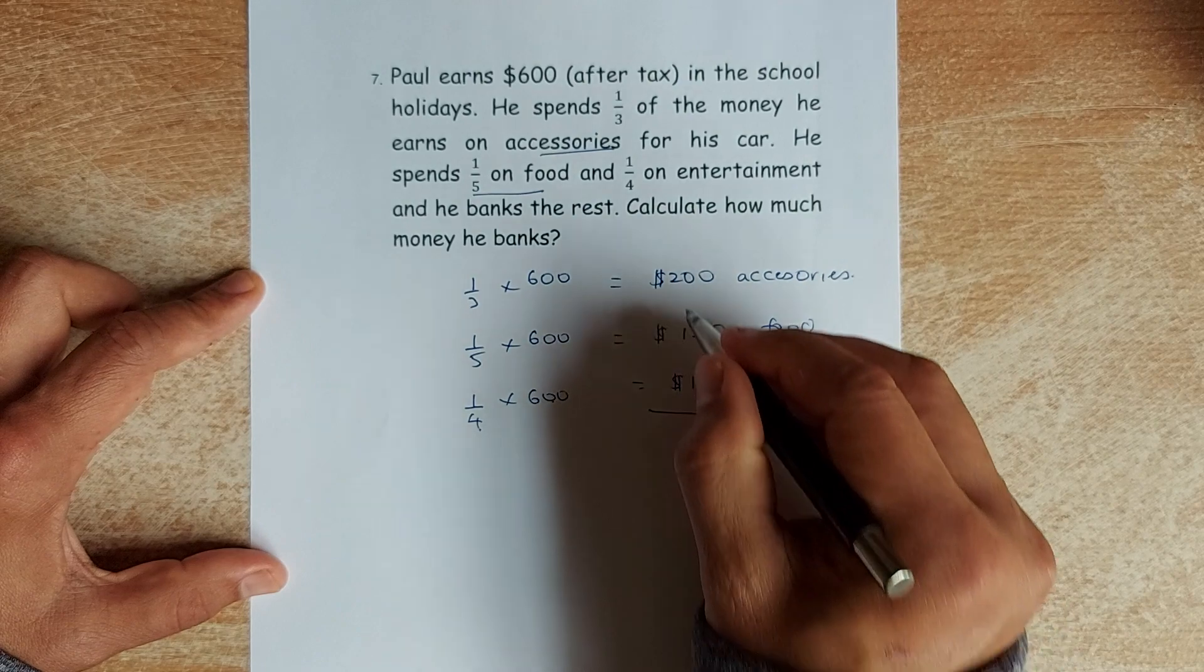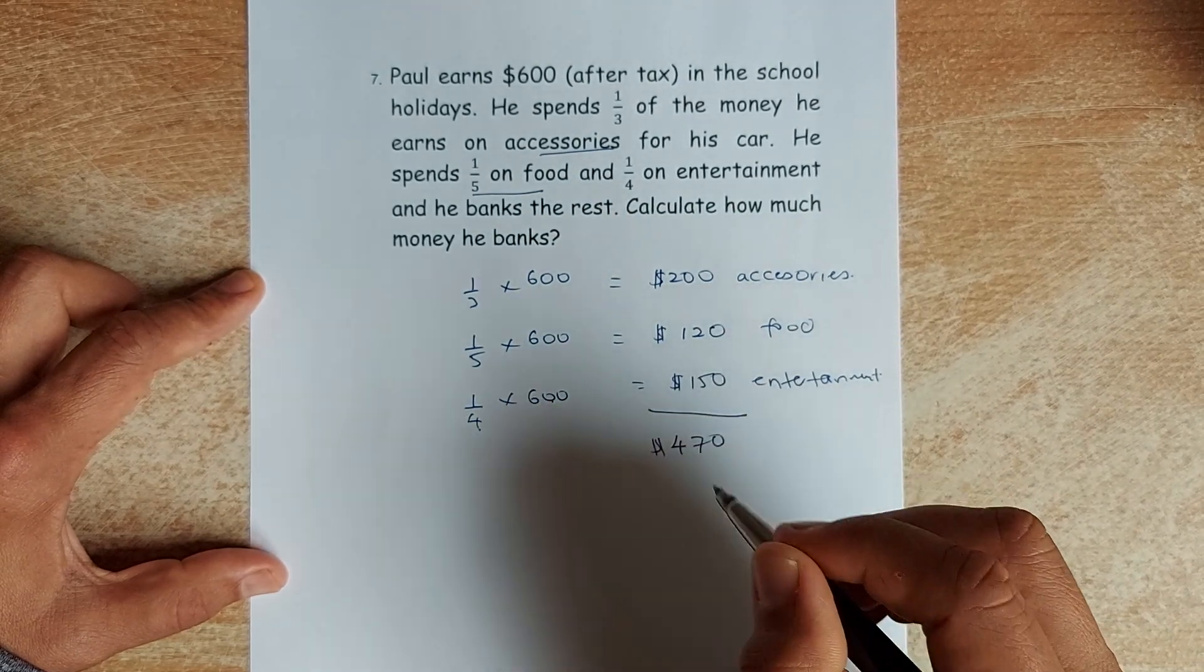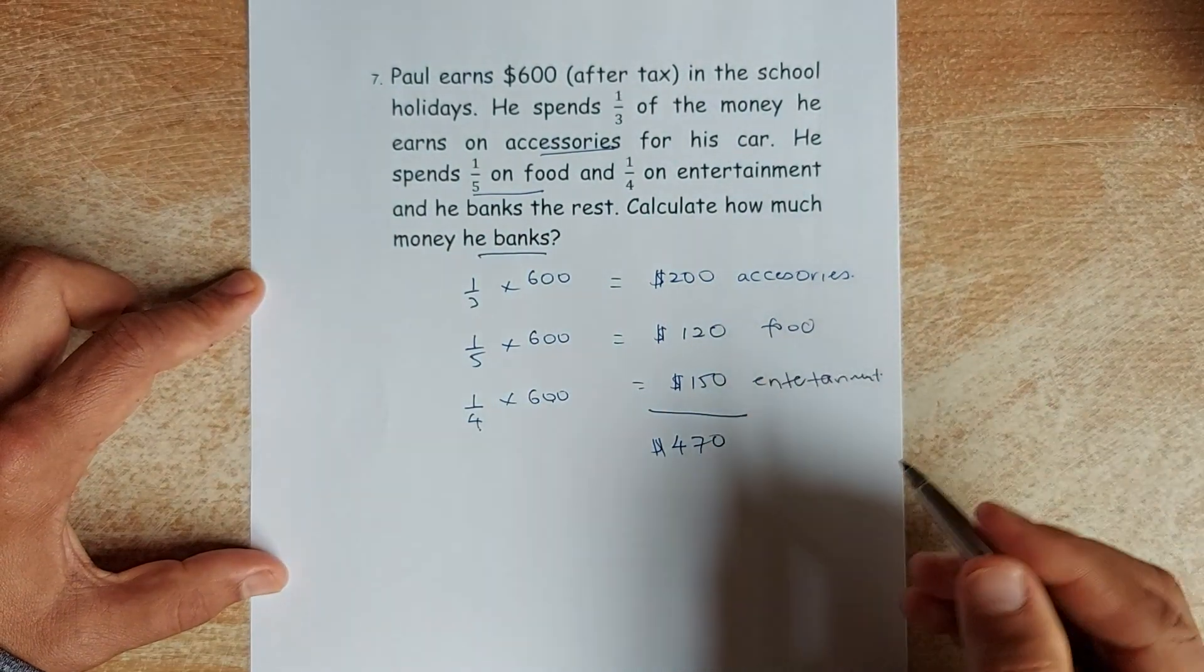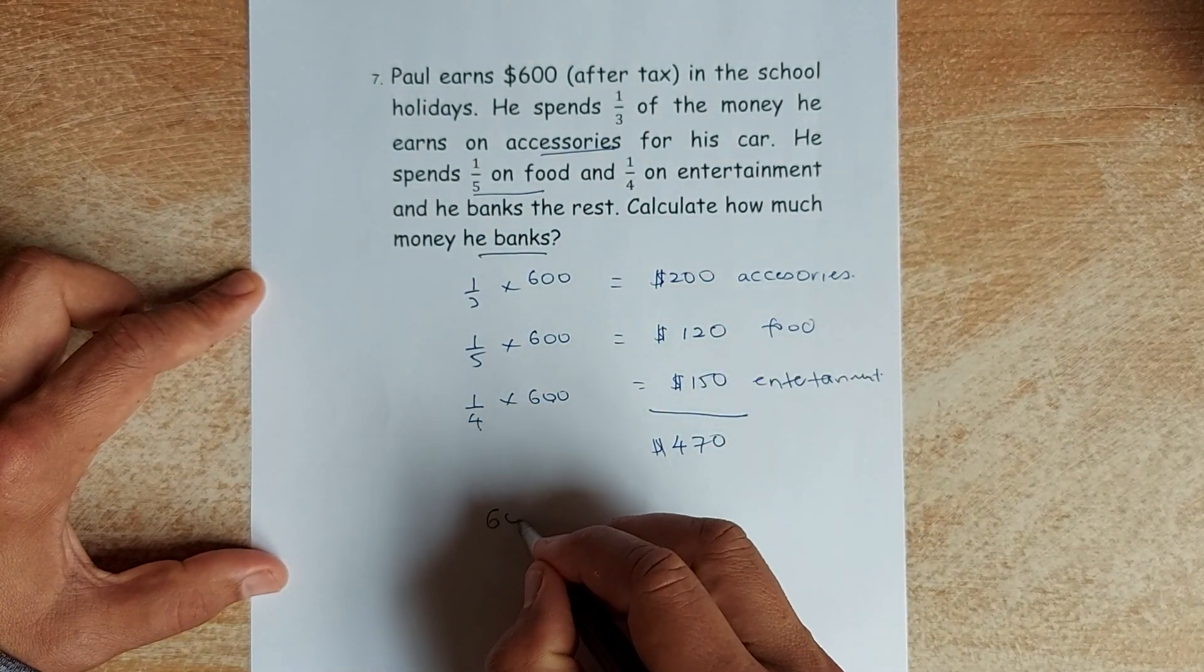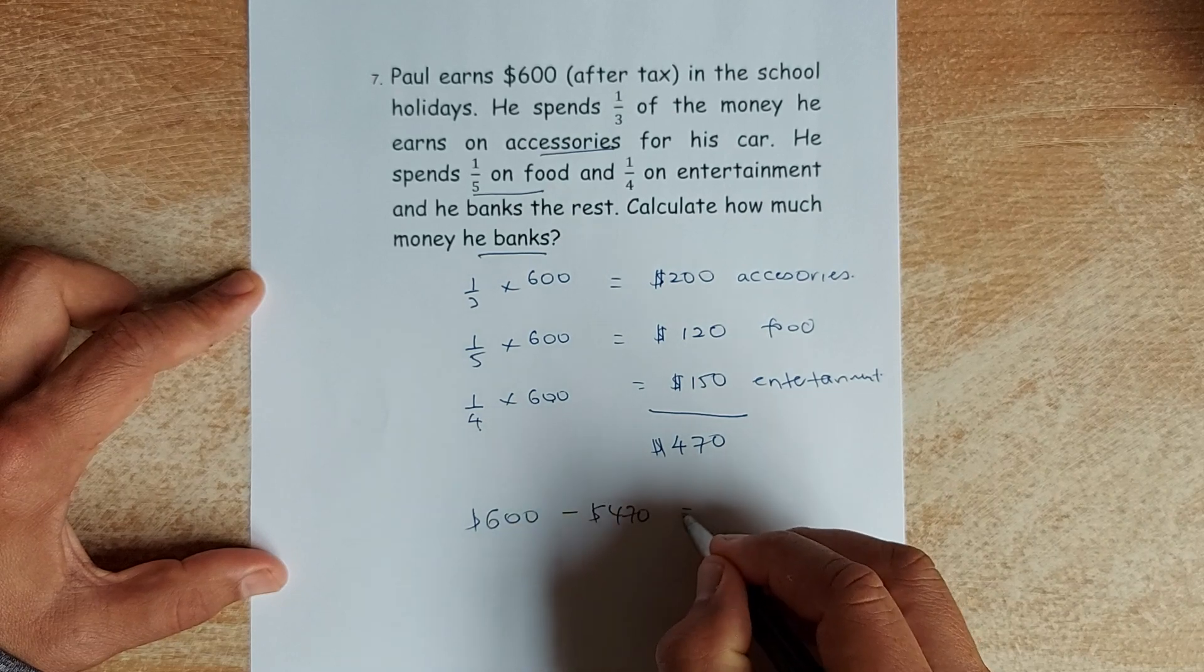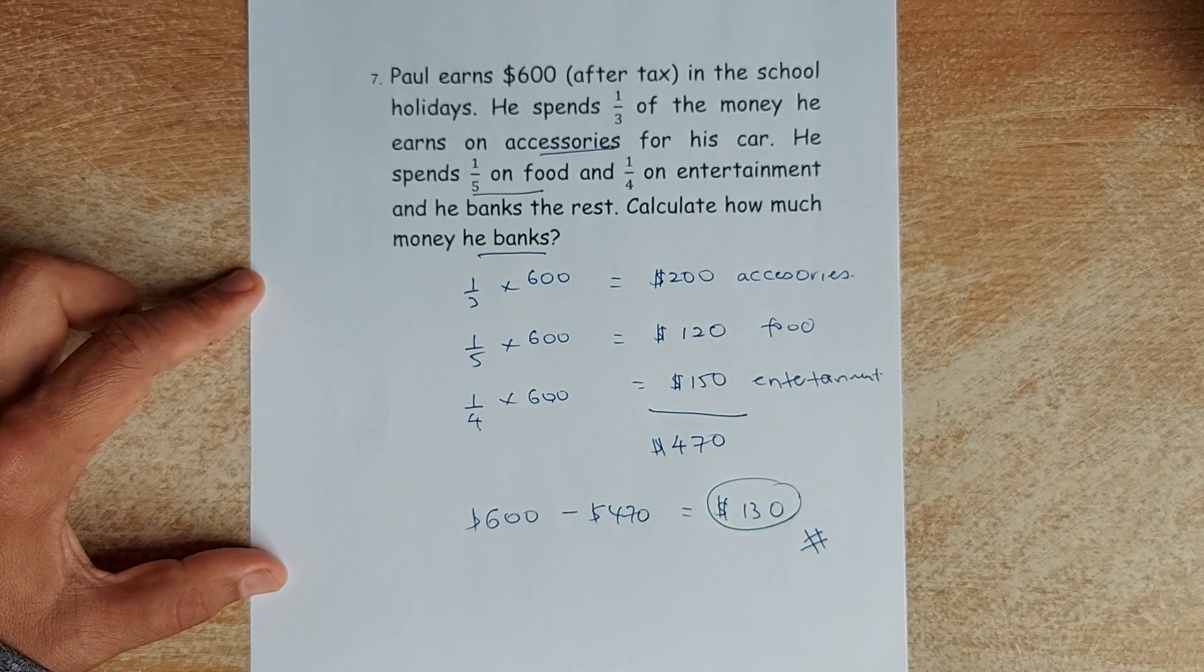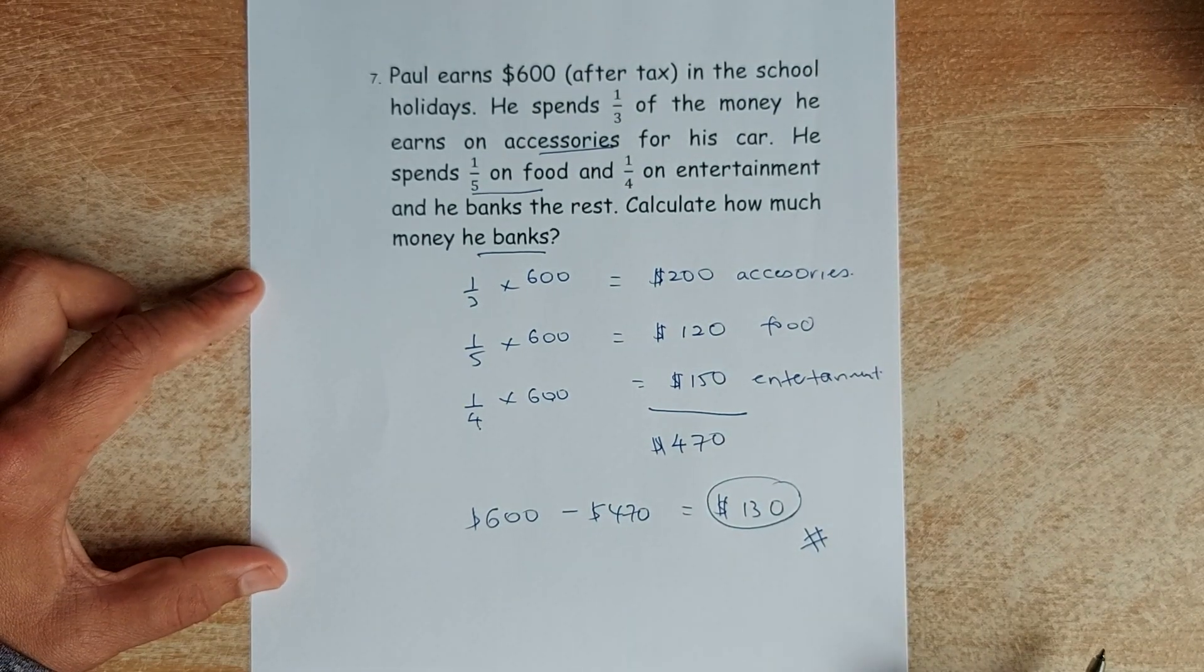So all together, he would have spent $470. So how much does he bank? So he's going to bank $600 minus $470. That will give him, he banked a total of $130. And that will give you the answer for question 7.